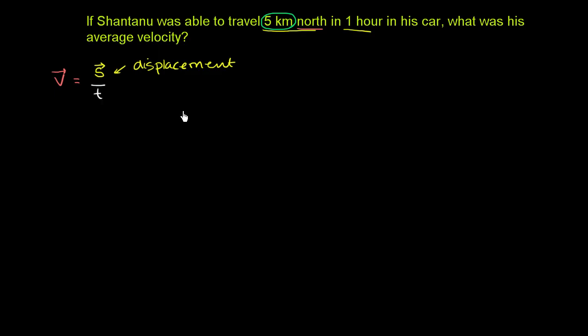So velocity is your displacement over time. If I wanted to write an analogous thing for the scalar quantities, I could write that speed, and I'll write out the word so we don't get confused with displacement. Or maybe I'll write rate. Rate is another way that sometimes people write speed.